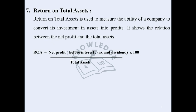Return on Total Assets is used to measure the ability of a company to convert its investment in assets into profits. It shows the relationship between Net Profit and Total Assets. Return on Assets equals Net Profit before Interest, Tax and Dividend, divided by Total Assets, multiplied by 100.